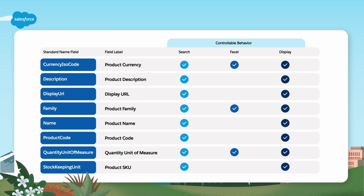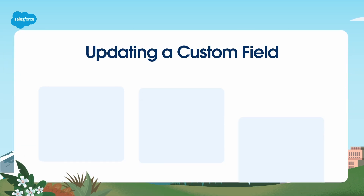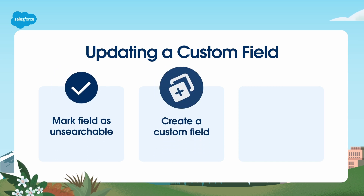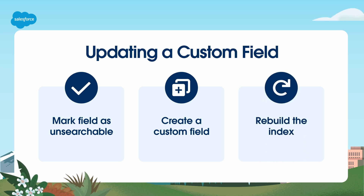You also can add custom fields as needed to make them available to your products. Here you can see some of the custom fields that let you control search, facet, and display behavior. It's important to follow a few steps when updating a custom field: mark the field as unsearchable in your org; if you're renaming a field, create a custom field with the new name; if you're only removing a field, rebuild the index; mark the new custom field as searchable in your org; then rebuild the index.